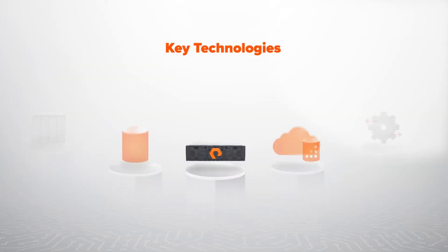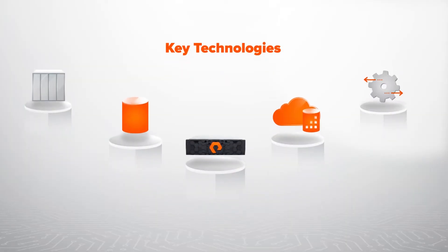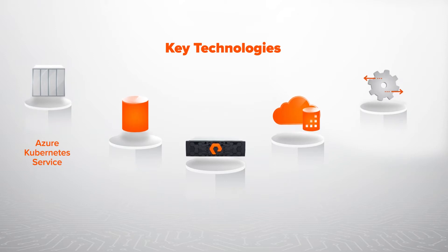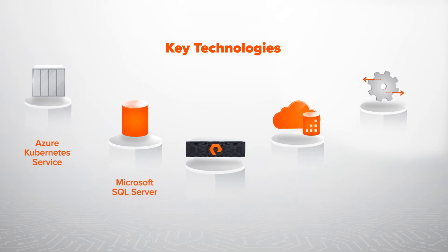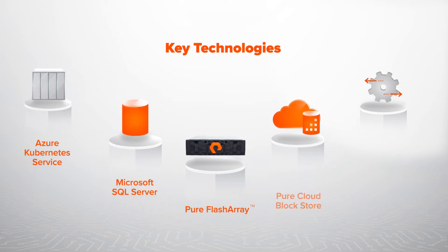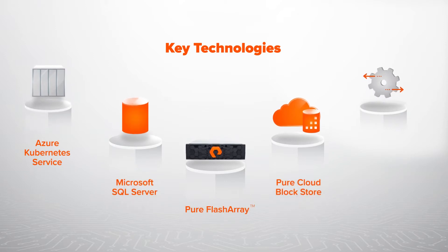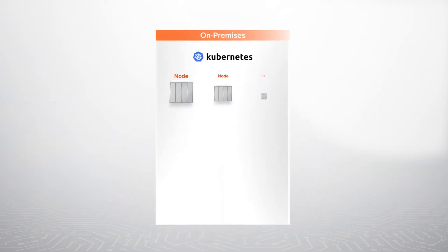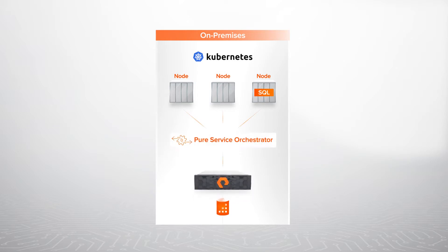Our demo uses five key technologies: Azure Kubernetes Service, SQL Server, Pure Flash Array, Pure Cloud Block Store, and Pure Service Orchestrator. We start with an on-premises Kubernetes cluster running a SQL Server container with persistent storage provided by a physical Pure Flash Array.